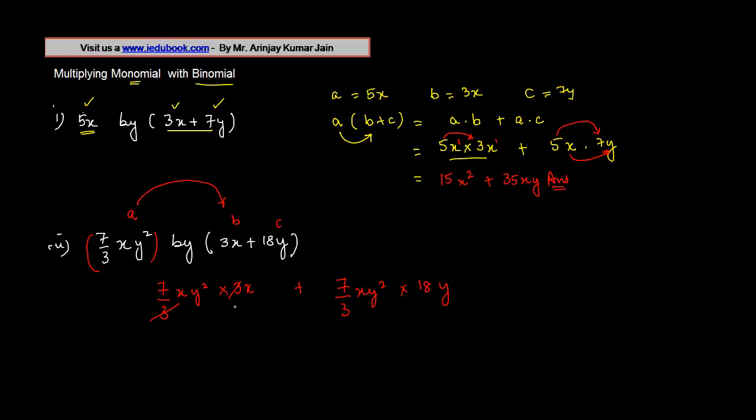Now this 3 will cancel this 3. We have 7xy square into x, so this will give us 7. The coefficient here is 1, x into x will give you x to the power 2, y square.